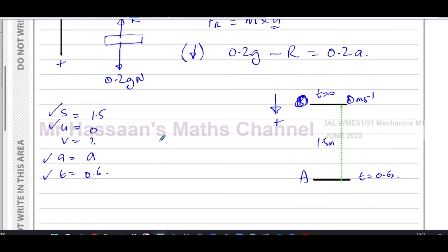So again, we're going to use S equals U T plus a half A T squared. So we have 1.5 equals U T is going to be zero because U is zero, a half times A, which we have to find, times 0.6 squared. So you'll end up with A is equal to two times 1.5 over 0.6 squared.